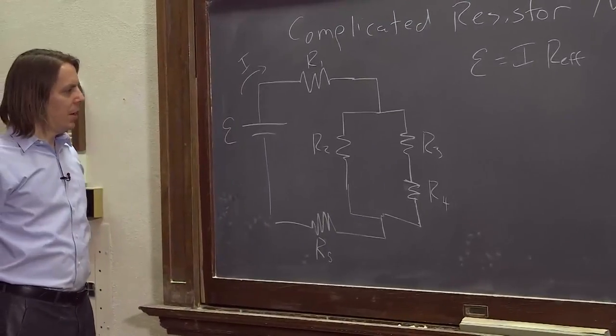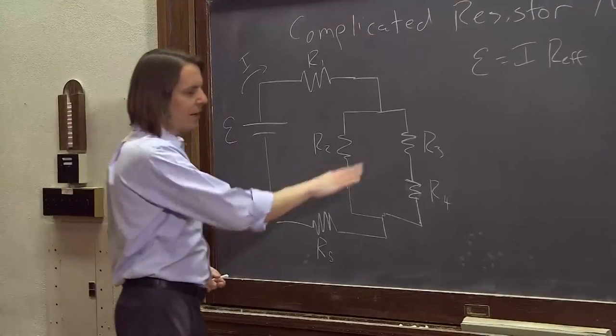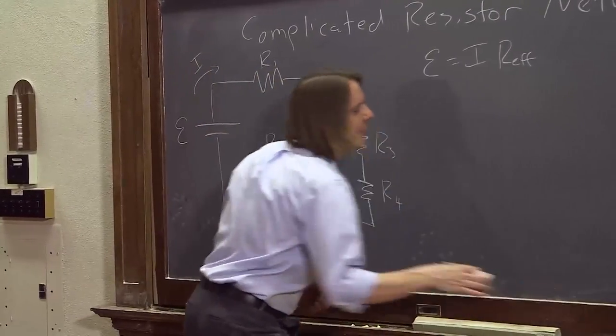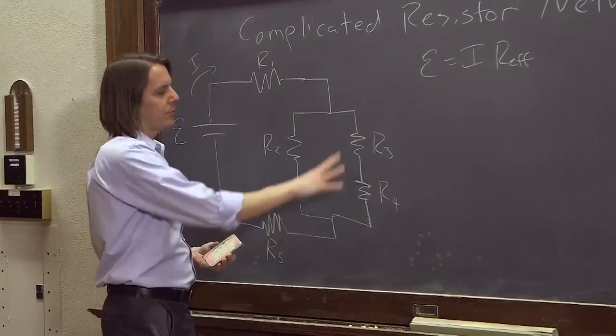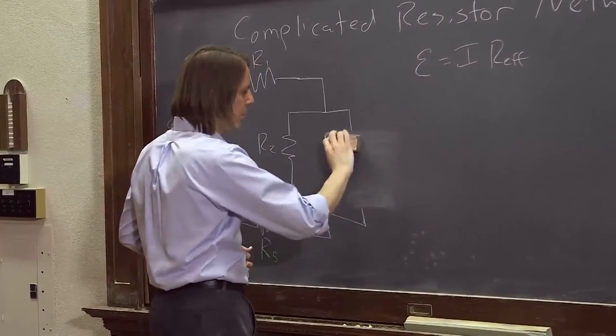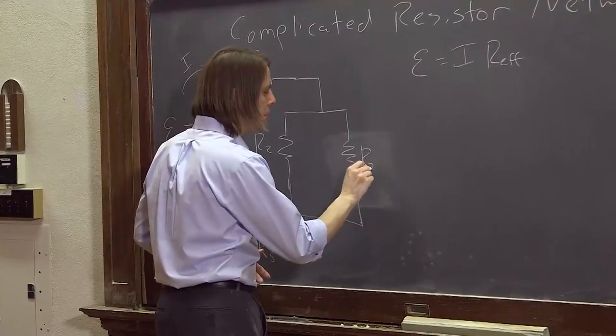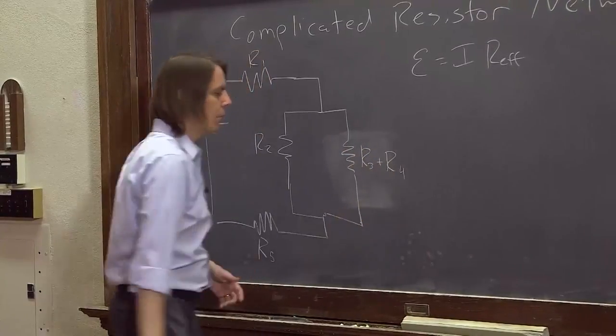What you can do is start just thinking about it in terms of series and parallel. The first thing you can look at, and I won't even redraw the circuit, is that this is two resistors in series. So that's really just a resistor that's R3 plus R4. So we'll draw it just as one resistor, R3 plus R4.